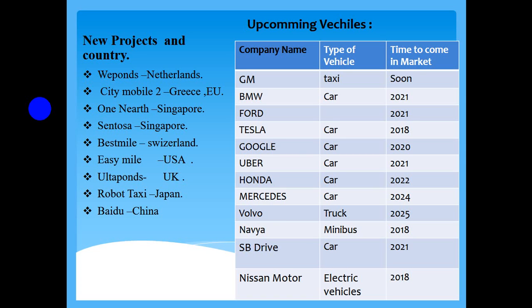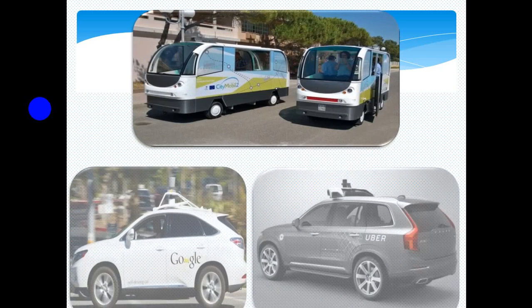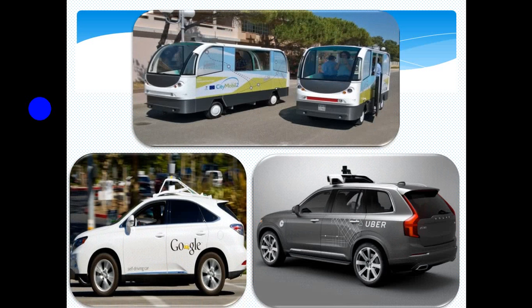Upcoming Vehicles on the Road. According to announcements by automobile industries, the following vehicles will come in the near future: GM Taxi will come soon. BMW will launch a car for public transportation by 2021. Tesla will launch a car by 2018 for public transportation. Google will launch a car by 2020 for public use. Uber will launch a car by 2021 for public use. And Volvo will launch a truck by 2025 for public use. Some examples shown include CityMobile2, Google driverless car, and Uber driverless car.